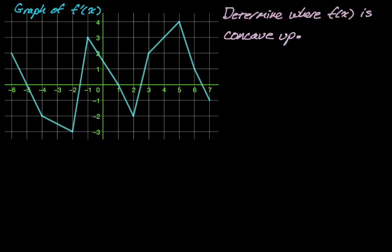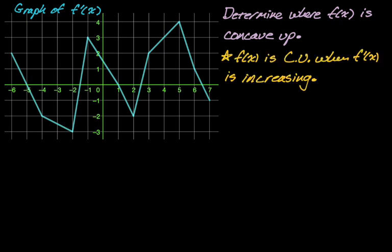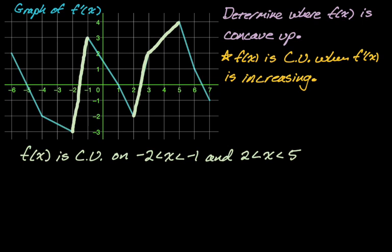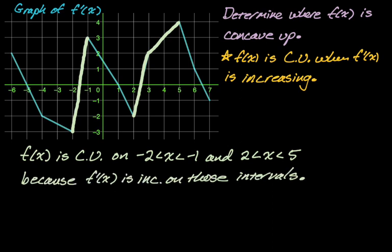Next, given the graph of f prime, determine where f of x is concave up. Concave up means f prime is increasing. I look at the graph, find where f prime is increasing, and highlight those intervals. f of x is concave up on negative 2 to negative 1 and from 2 to 5, because f prime is increasing on those intervals.